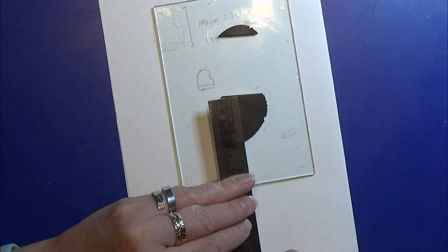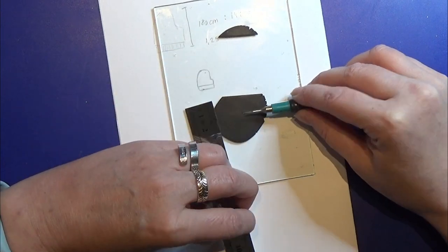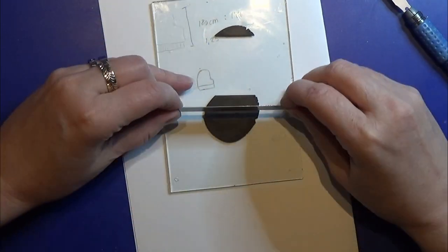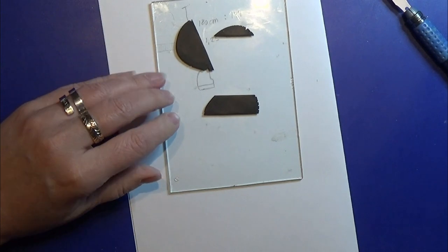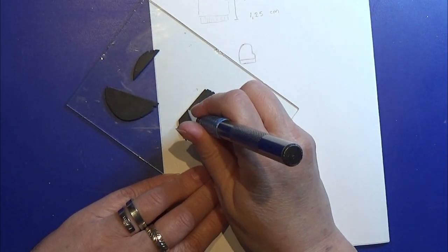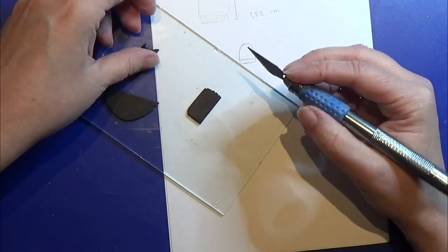I rolled out a piece of black clay on one of my smaller settings on the pasta machine. So this is not that thick. And then I am going to cut out the shape of the piano.